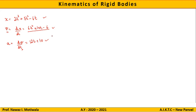As we said, motion curves are graphical representations of displacement, velocity, and acceleration with respect to time. If I want to draw a graph of displacement with respect to time — with displacement X on one axis and time t on the other — the highest power in the displacement equation is 3, meaning it follows a cubical pattern. So I will draw a cubic curve here.